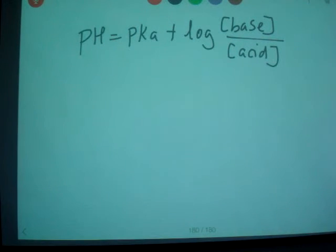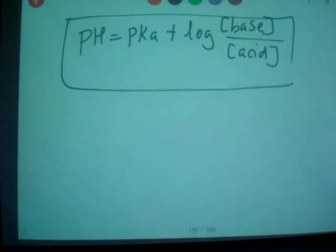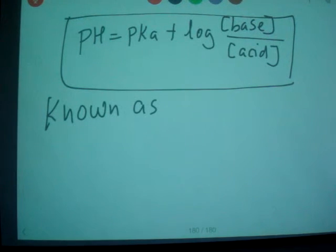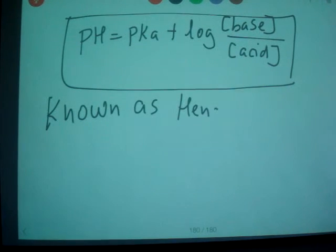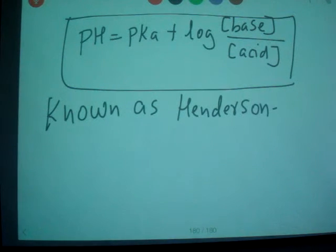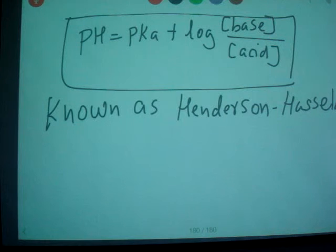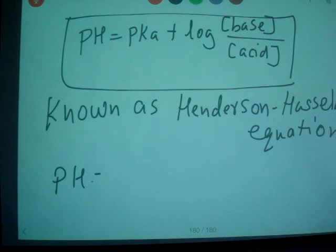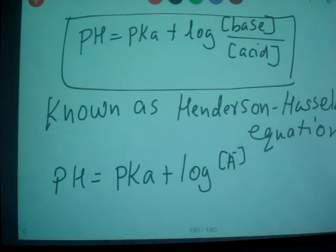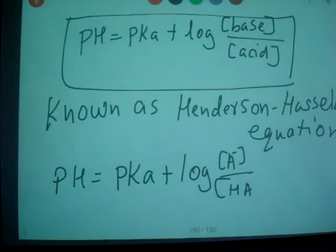This equation is generally shown this way and it's known as Henderson-Hasselbalch equation. Either you can write this way or you can write pH equals pKa plus log A minus concentration divided by HA concentration. That way you can write Henderson-Hasselbalch equation.